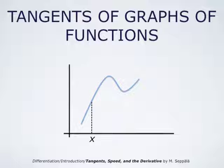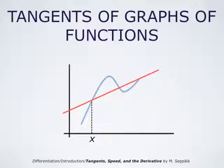Let us first concentrate on the problem of finding the slope of the line tangent to the graph of a given function at a given point. The graph in question is shown here and the point is indicated. It is the point x. We wish to find the slope of the line tangent to the graph of this function at (x, f(x)). We start by drawing a secant line that intersects this graph at two or more points. The two intersection points are indicated here: the first is the point (x, f(x)) and the second one is on the right.